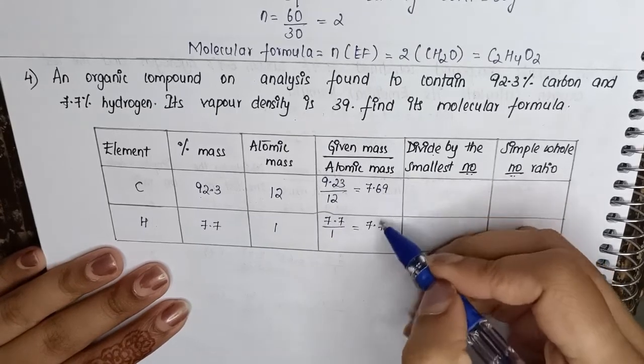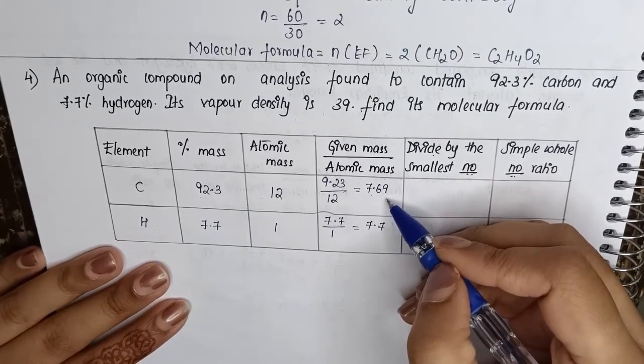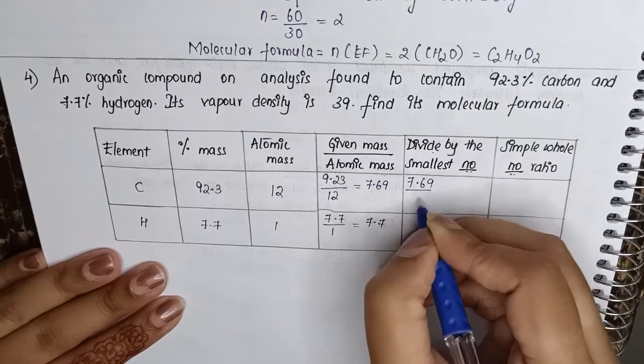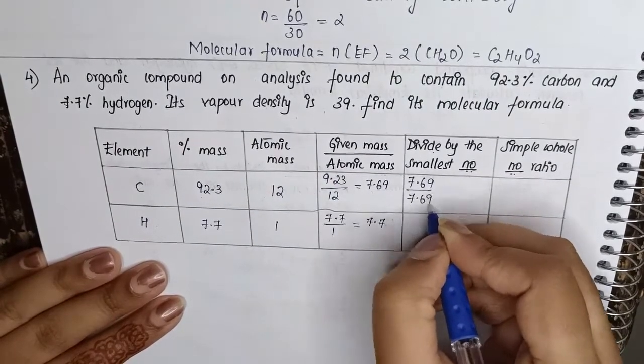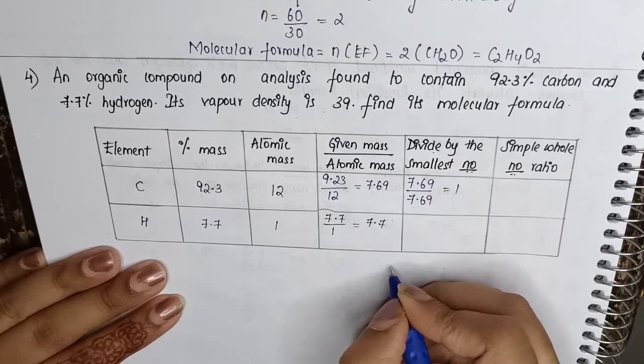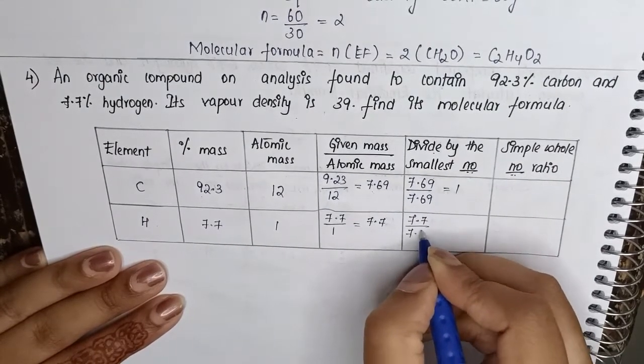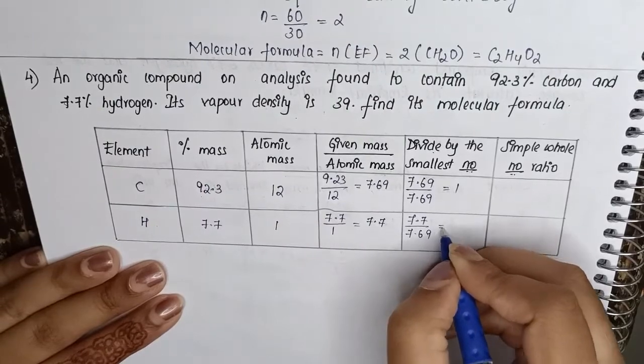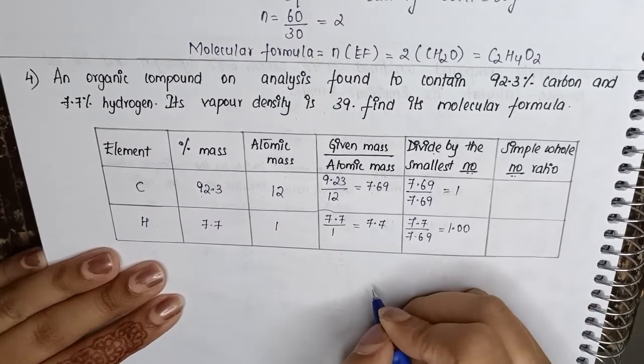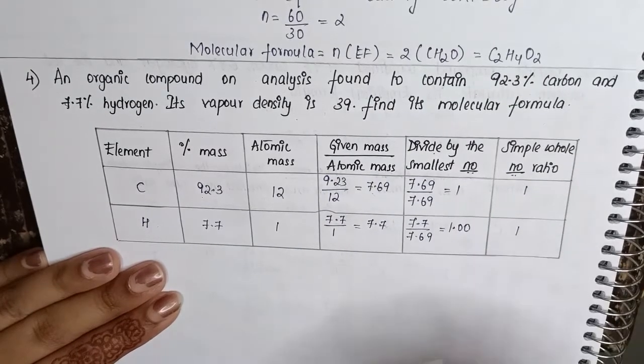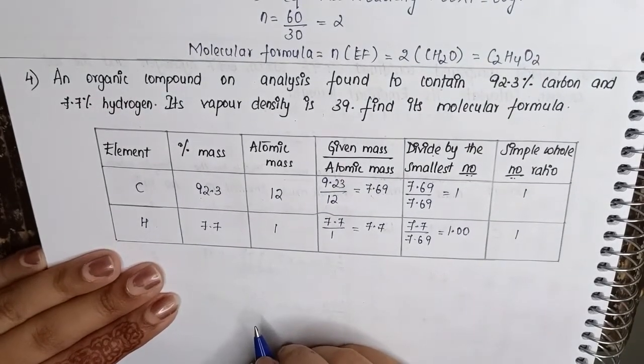Now in the next column we have divide by smallest number. So from these two values, 7.69 is the smallest number. So here we will divide each value by the smallest number. This will be equal to 1. This will be 7.7 divided by 7.69, which will be equal to 1.00. When we take this as the simplest ratio, this will be 1 and 1.